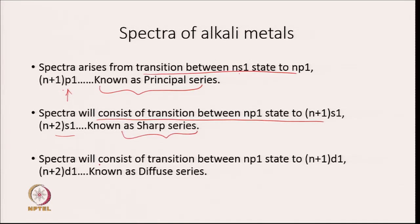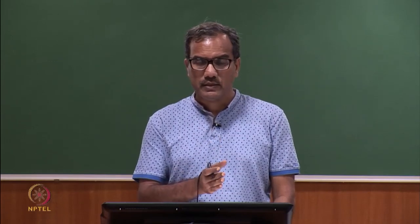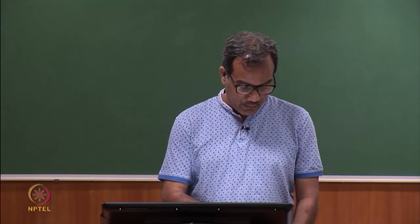Spectra can also have contributions from transitions between Np1 state to N+1d1 or N+2d1 state. Since electrons are landing in the D state, this is known as the diffuse series. The transition between Ns1 to N+1d1 is not allowed since ΔL is +2. So transition from S state to D state is not allowed.